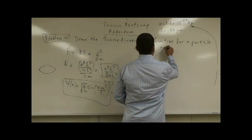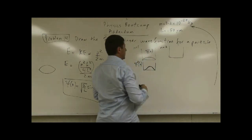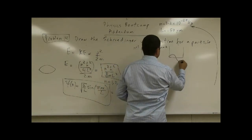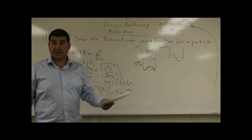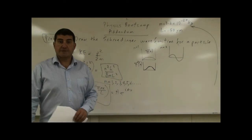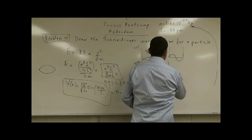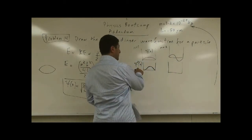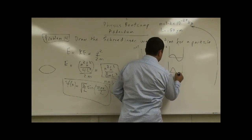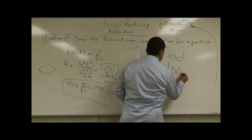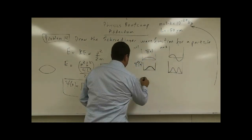In the n equals 2 state, it goes up, down, and up again — it's like fitting a complete wave. If you want to plot the probability density function, you square that. This is the n equals 2 state.